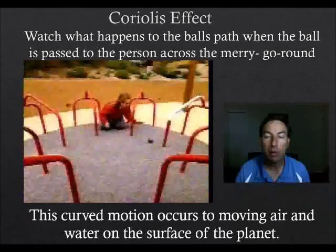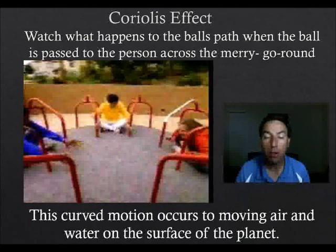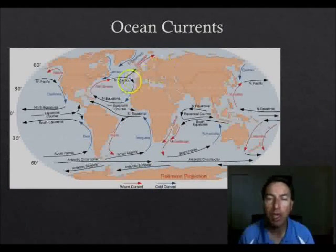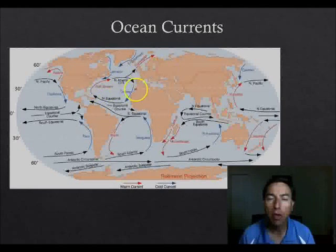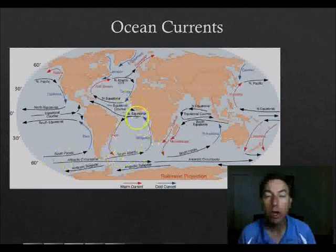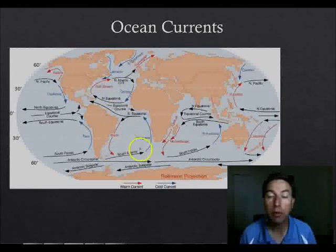Wind particles and water particles follow the same kind of curved path depending on how the Earth is moving. Ocean currents are very important in climate as well, and because of the Coriolis effect, water currents also travel in curved paths. This creates large areas of water circulation throughout the world's oceans called gyres. In the northern hemisphere they travel clockwise, and in the southern hemisphere counterclockwise.